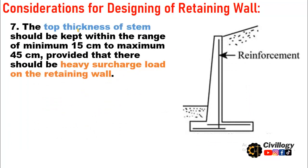Consideration seven: The top thickness of the stem should be kept within a specific range. The minimum thickness is 15 cm and the maximum thickness is 45 cm, where the maximum applies when there is a heavy surcharge load. If the surcharge is at the level of the wall, the minimum width can be provided. If the surcharge exceeds the height of the wall, the maximum width should be provided.